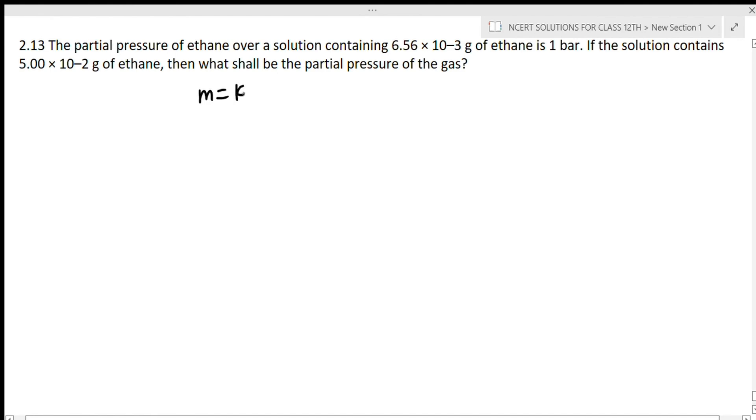So here the formula is mass equals kH into partial pressure. Mass given in the first situation is 6.56 × 10^-3, kH value we don't have, and partial pressure is 1 bar. In the next question, mass is 5 × 10^-2.